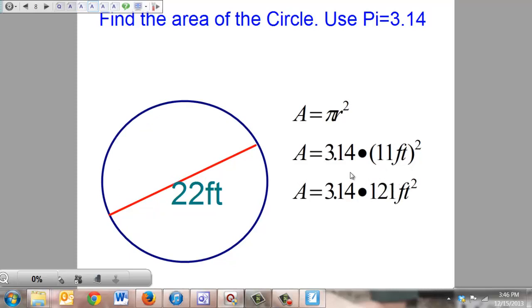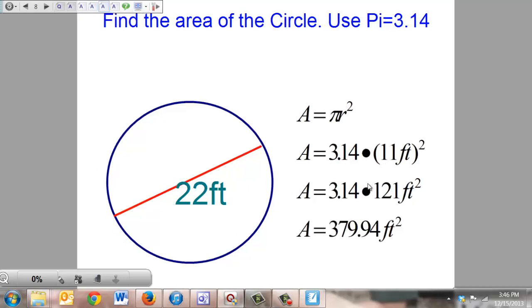From here, all you have to do is multiply these two numbers. 3.14 times 121 is 379.94 feet squared. For your final answer, which is circled, that is going to represent your radius.